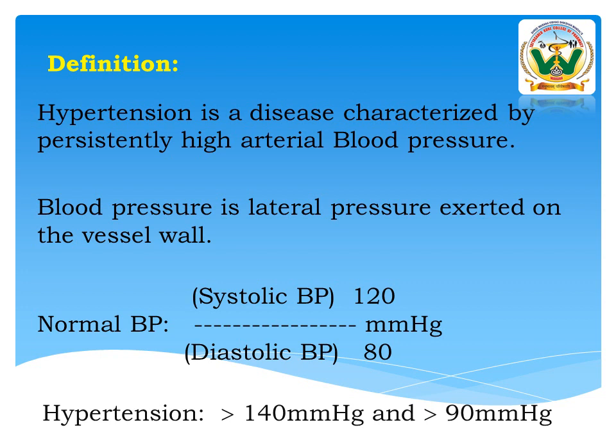Coming to the definition of hypertension: hypertension is a disease characterized by persistently high arterial blood pressure. Blood pressure is the lateral pressure exerted on the vessel wall. Normal blood pressure is systolic divided by diastolic pressure — 120/80 mmHg. A patient is said to have hypertension when systolic blood pressure is more than 140 mmHg and diastolic blood pressure is more than 90 mmHg.